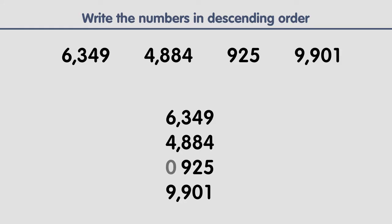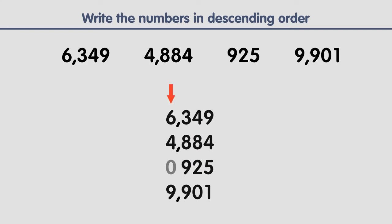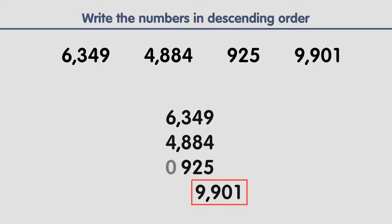Each digit position creates a column: first column, second column, third column, and fourth column. The third step is to find the largest number. The largest number is the number with the largest digit in the first column. In the first column we have six, four, zero, and nine. The largest digit is nine, so this is the largest number.